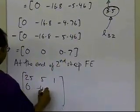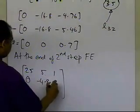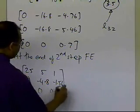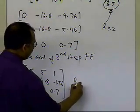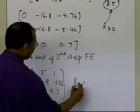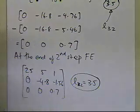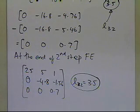Second row stays the same, and the third row will be 0, 0, 0.7. And from here I'm getting L32 is equal to 3.5, okay, third row, second column of the lower triangular matrix is 3.5.